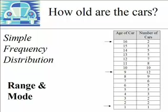Also, we can identify the mode — that is, the value that occurred most frequently. The most frequent response was people reporting that their car was 9 years old. There were 12 people who reported that their car was 9 years old. So a simple frequency distribution further organizes the data, making it easy to see for each response how many times it occurred.